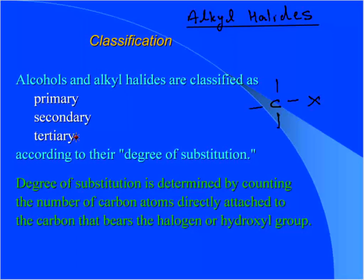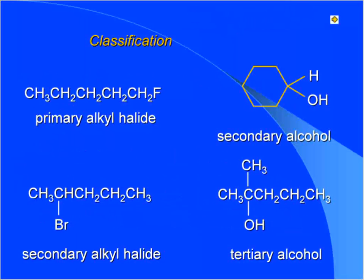Why is it important? Because of the reactions. There are several reactions in which it matters which type of alkyl halide or which type of alcohol it is. Here are some examples. The carbon connected to F is connected to only one carbon — so this species is a primary alkyl halide. Here, the carbon connected to Br is connected to two carbons — secondary alkyl halide. This carbon connected to two more carbons — secondary alcohol. Carbon connected to Br and connected to three carbons — tertiary alcohol.